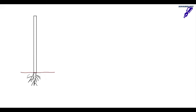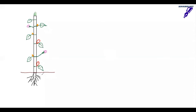Let us first draw a typical plant and label all the parts in detail. Here I have drawn the stem and the root system. The stem is going to bear leaf, flower, fruit, and bud. It has nodes and internodes. The underground part, which is homogeneous in nature, is the root. Root always arises from the radicle and the shoot always arises from the plumule. So we have the root system and the shoot system.